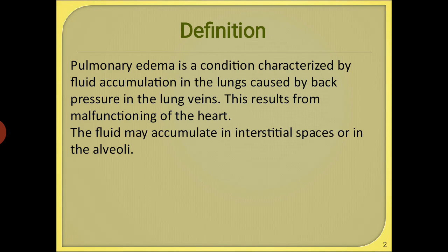This fluid may accumulate in the interstitial spaces or in the alveoli. Because of pulmonary congestion, when there is excess blood filled in the pulmonary circulation, the increased pressure forces the blood out of the vessels into the interstitial spaces, and it can go inside the alveoli.